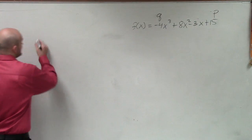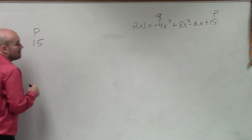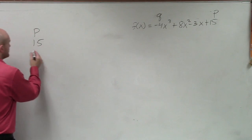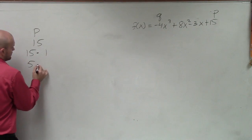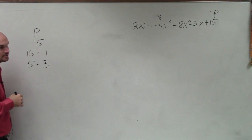So let's just do p over here. Now remember, we're going to be doing plus or minus, so let's just go and list that. We could do 15 times 1, 5 times 3, and that's it, right?